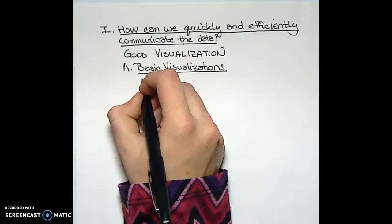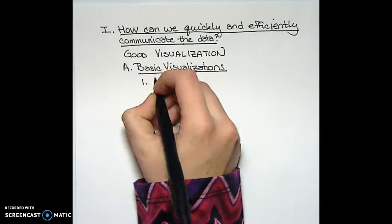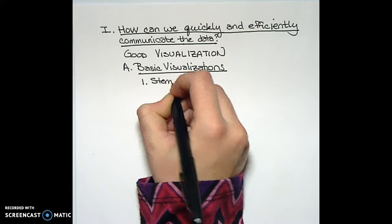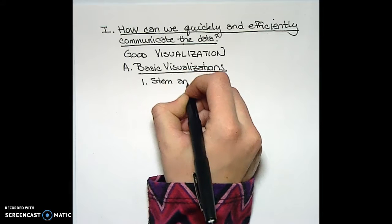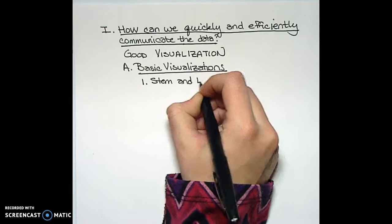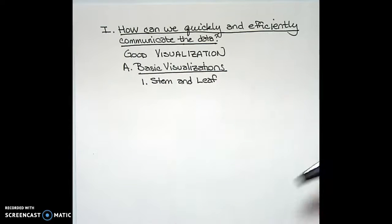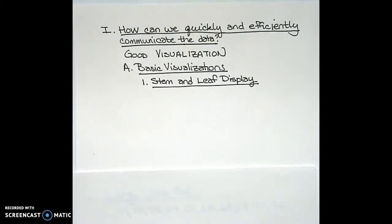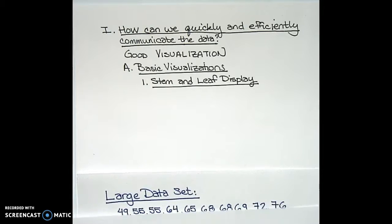We can initially turn to a visualization called a stem and leaf display. Throughout our discussions of statistics, and starting with this example, we'll be working with a few different data sets. The first one we're going to talk about is what I'll call the large data set.